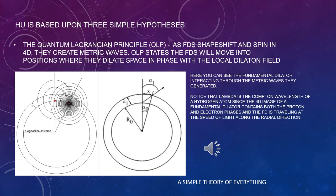Notice that if one knows where the fundamental dilator is at every time and knows its 4D mass, one knows the force acting upon it. Here you can see the fundamental dilator interacting through the metric waves they generated. Notice that lambda is the Compton wavelength of a hydrogen atom since the 4D image of a fundamental dilator contains both the proton and electron phases and the fundamental dilator is travelling at the speed of light along the radial direction together with the universe.